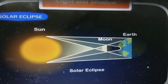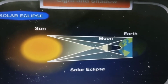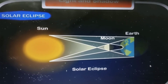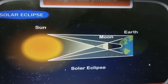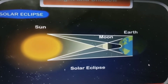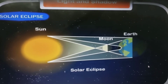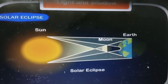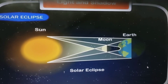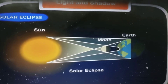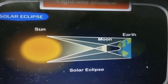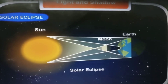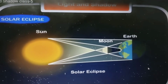Solar eclipse occurs when the moon comes between the sun and the earth, and it occurs on new moon day. The shadow of the moon falls on a portion of the earth and the people from that part are not able to see the sun. This is how solar eclipse occurs.